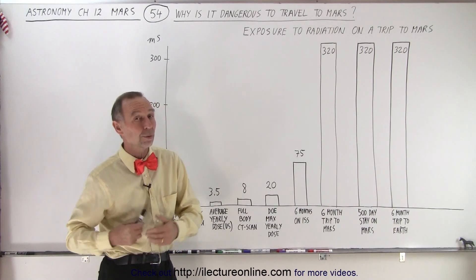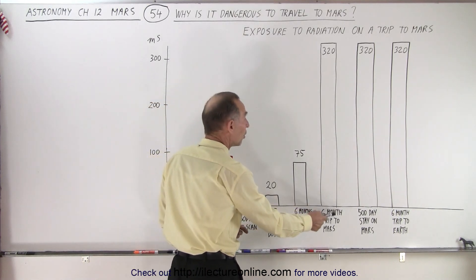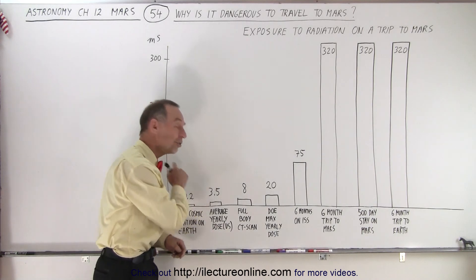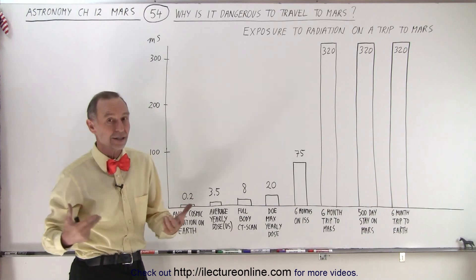What kind of radiation will you receive when you go to Mars? When you go to Mars, a six-month trip, you'll receive about 320 millisieverts, which is about 100 times the amount any person typically gets during an entire year.